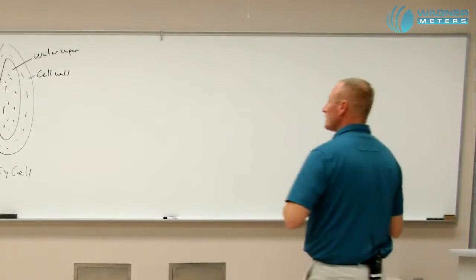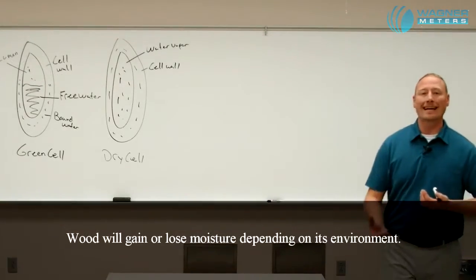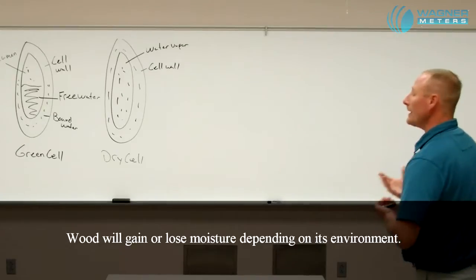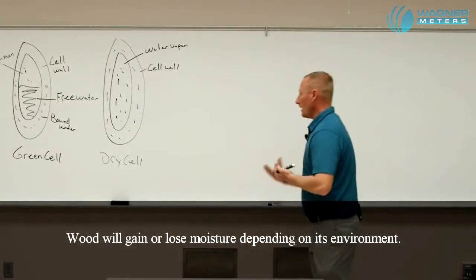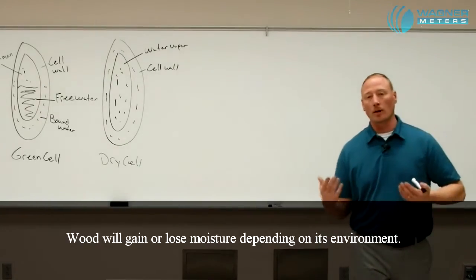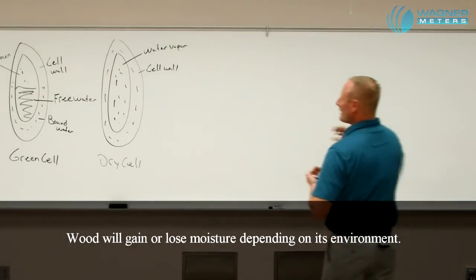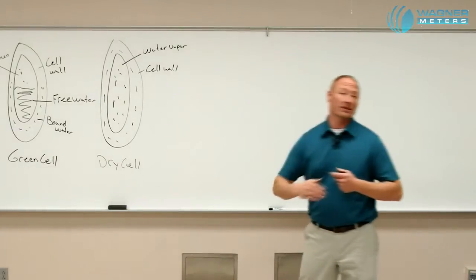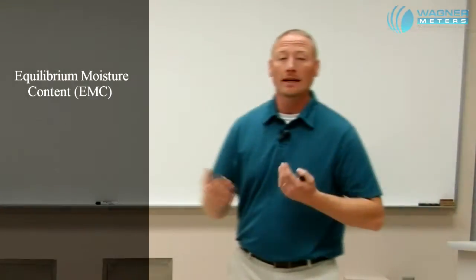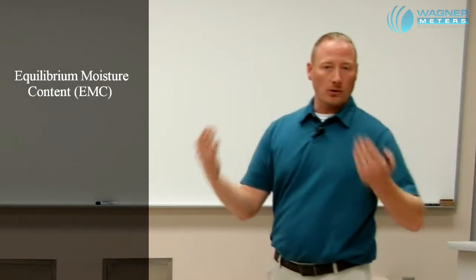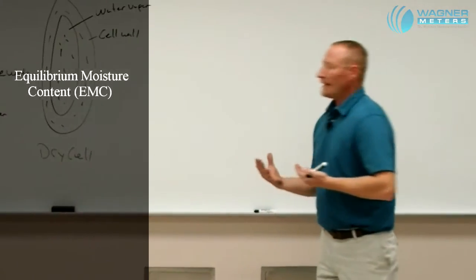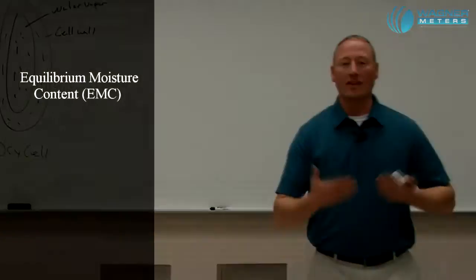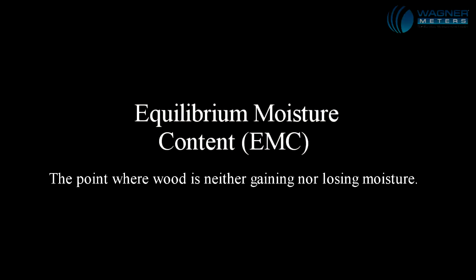What that means is that a cell will gain or lose moisture depending on the moisture content to which it is exposed. When it reaches an equalizing point where the cell is neither gaining nor losing moisture, we call this equilibrium moisture content, or EMC.